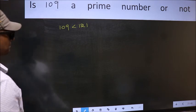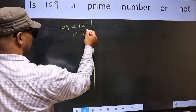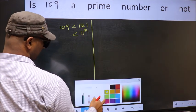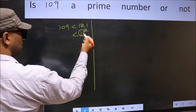Next, 121 is 11 square. Now you write all the prime numbers less than this number 11.